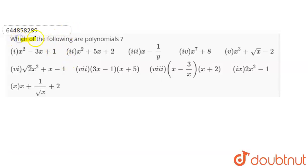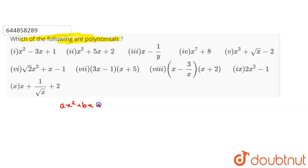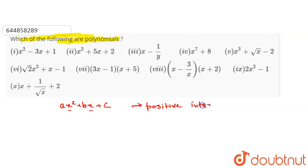We have been given 10 questions to check which of the following are polynomials. The most important condition for being a polynomial is that it should have positive integral powers. That means the power of every variable should be a positive whole number. Expressions satisfying this condition are known as polynomials.